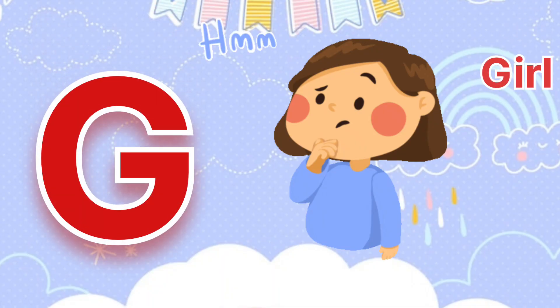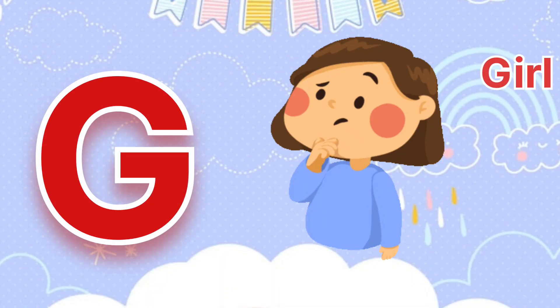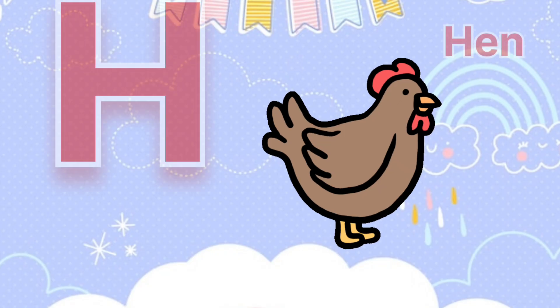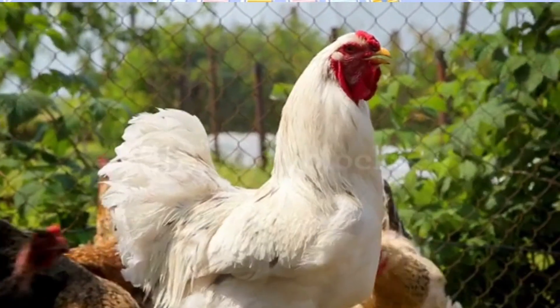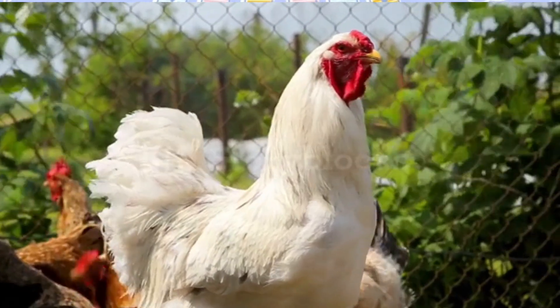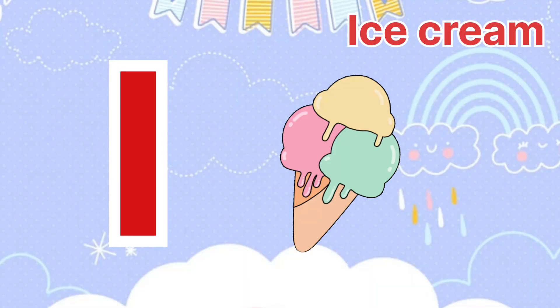G is for Girl. G is for Girl. H is for Hand. I is for Ice Cream.